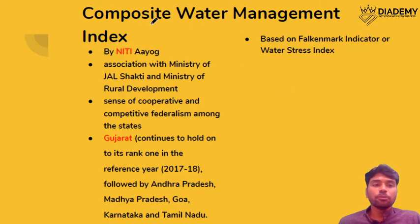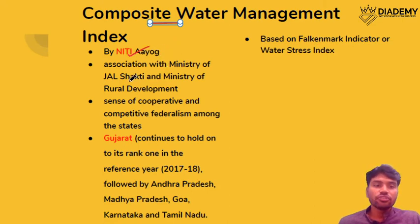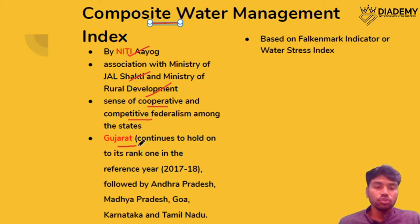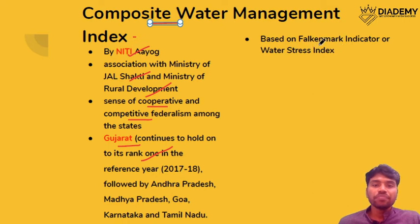The Composite Water Management Index 2.0 is given by NITI Aayog in association with the Ministry of Jal Shakti and the Ministry of Rural Development. It generates a sense of cooperative and competitive federalism among states. Gujarat continues to hold Rank 1, followed by Andhra Pradesh, Madhya Pradesh, Goa, Karnataka, and Tamil Nadu. This index is developed based on a Falkenmark indicator of water stress.